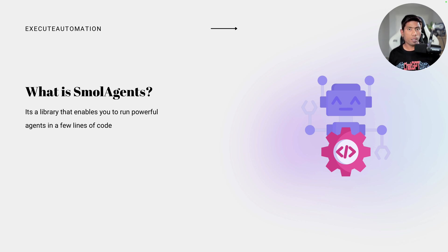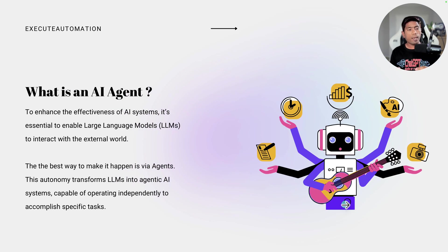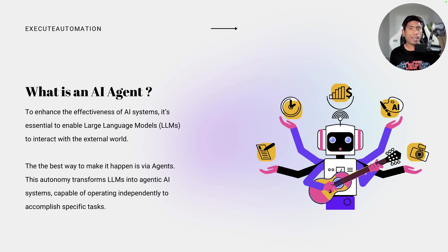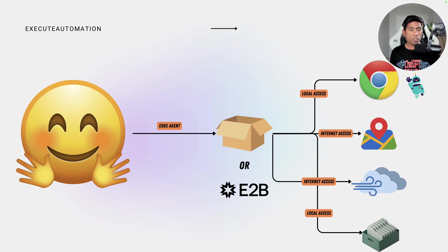If you've not heard about the concept of AI agents before, AI agents help you enhance the effectiveness of an AI system. It's essential to enable large language models to interact with the external world, and the best way to do that is via agents. They autonomously transform the large language model into an agentic AI system capable of operating independently to accomplish specific tasks.